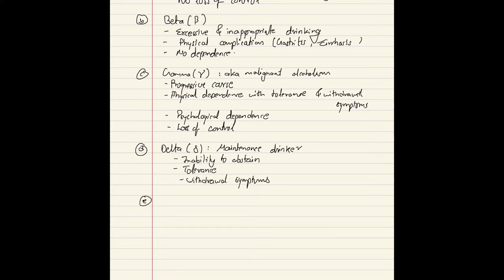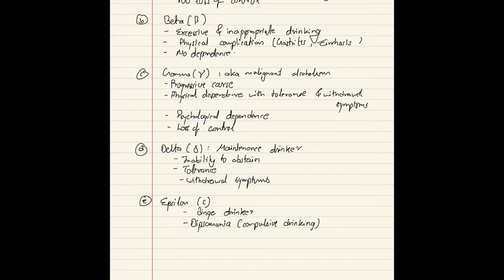The Epsilon category: people in this category are characterized as binge drinkers, or dipsomania — compulsive or heavy drinking. They drink excessively for a certain period but then abstain completely from alcohol until the next binge experience.